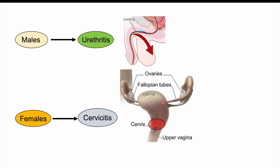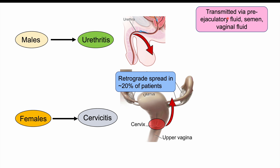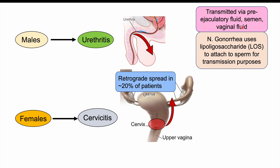In some cases, organisms can spread further up the female reproductive system in what is called retrograde spread, occurring in approximately 20% of patients. Once individuals are infected, the organisms can be spread via pre-ejaculatory fluid, semen, or vaginal fluid. Neisseria gonorrhea uses lipoligosaccharide (LOS) to attach to sperm for transmission purposes.